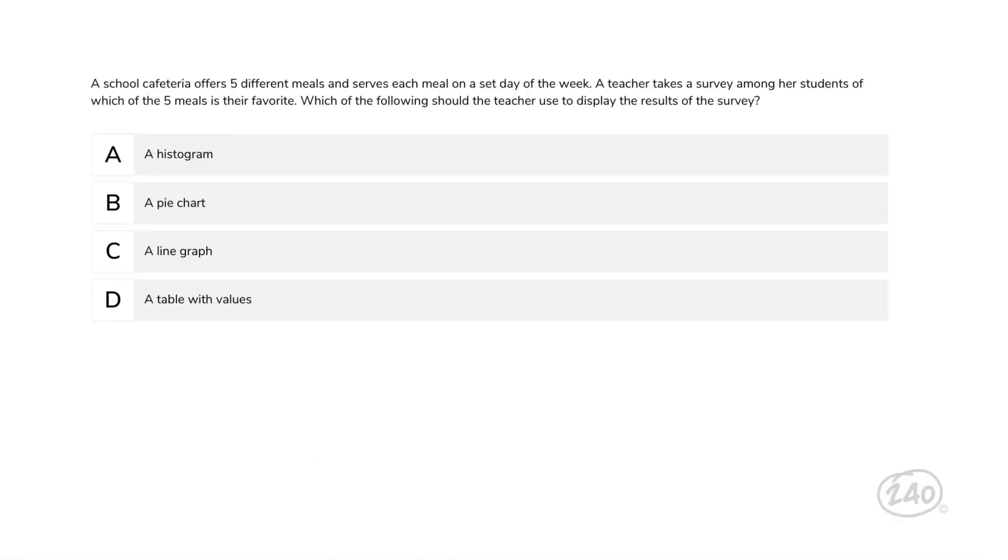What about data representation? A school cafeteria offers five different meals and serves each meal on a set day of the week. A teacher takes a survey among her students of which of the five meals is their favorite. Which of the following should the teacher use to display the results of the survey? Well, a pie chart is best to show how a whole data set is divided into parts. A pie chart is a great way to visually depict how many students named each of the five meals as their favorite because it visually divides a whole by percentages. So this choice is best.